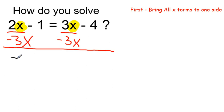But in this case, if I do that, I would get negative x minus 1 equals negative 4. If I subtract 3x from one side, I have to do it from the other.